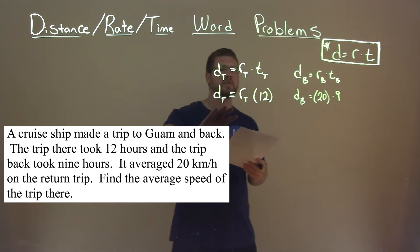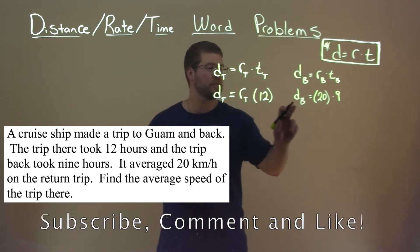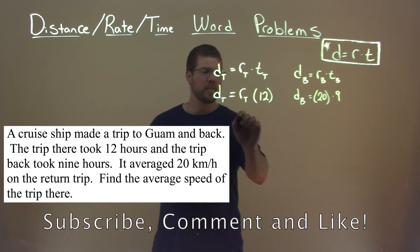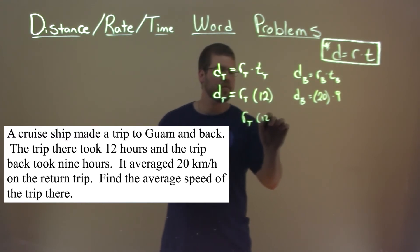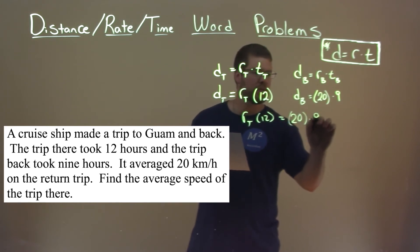And so now we have two equations that we actually can set equal. Because the distance there is equal to the distance back. It's the same distance. So let's set them equal to each other. r_t times 12 is equal to 20 times 9.